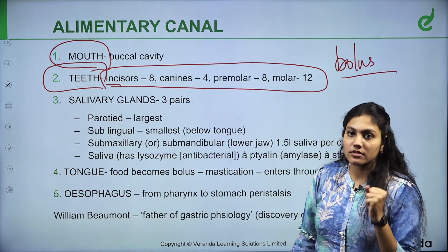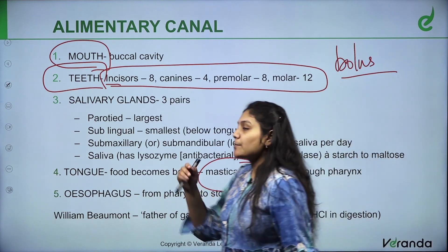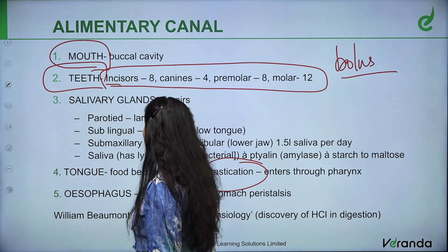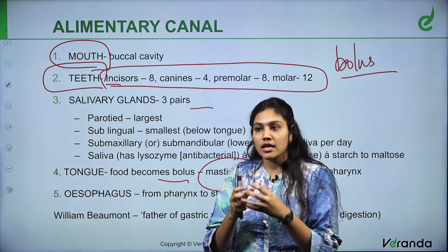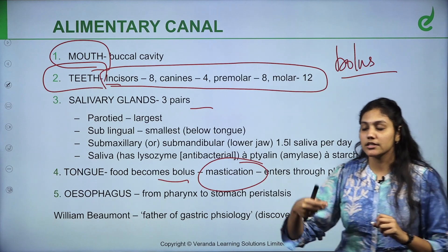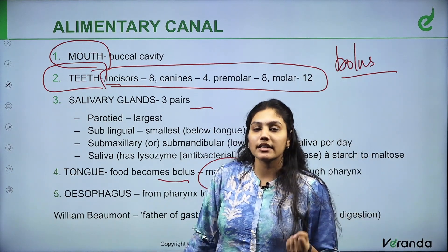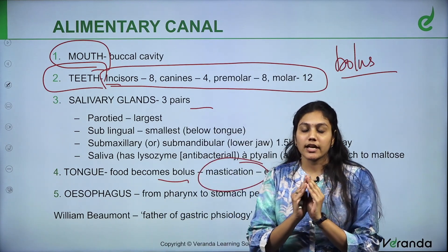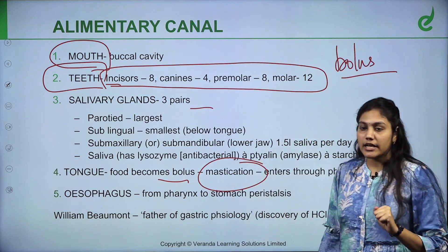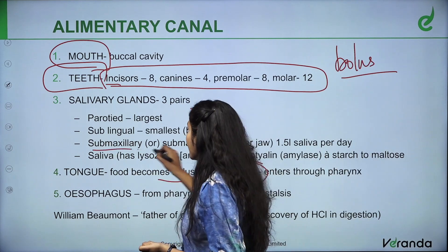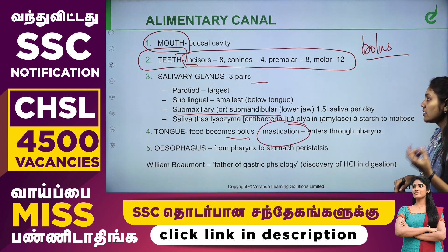A group of cells that perform a common function secrete enzymes and hormones. When we talked about glands, we discussed two types: exocrine and endocrine. So, salivary glands are exocrine glands.